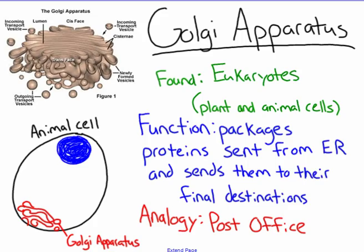The Golgi apparatus is only found in eukaryotic cells — plants and animals. When you see an image of the Golgi apparatus, it's typically toward the outside of the cell, and it looks very similar to the ER. The reason it's toward the edge most times is because the Golgi apparatus acts as a post office — it packages the proteins and materials coming in from the ER and sends them to their destination, which could be outside or within the cell.